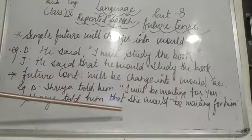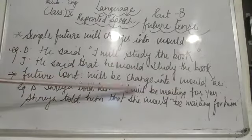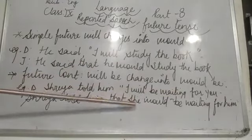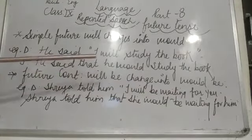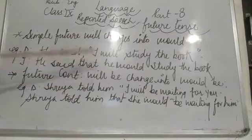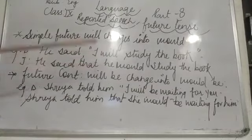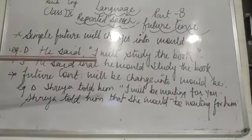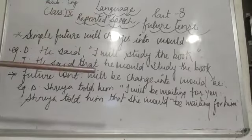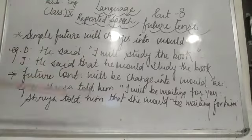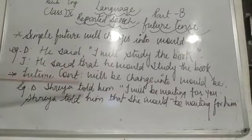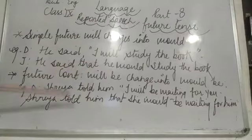As you can observe, 'will be' is changed into 'would be.' One more example: he said, 'He will not be flying kites.' When we change this into indirect form: he said that he would not be flying kites. I hope you understood well.